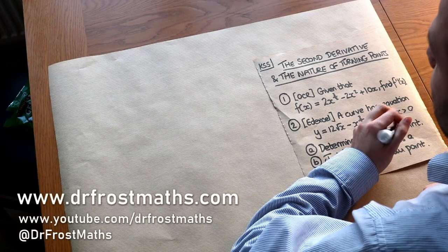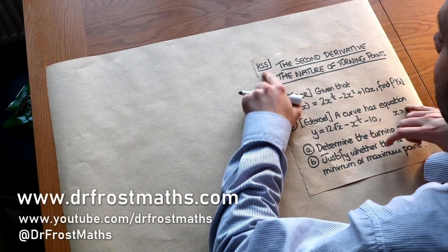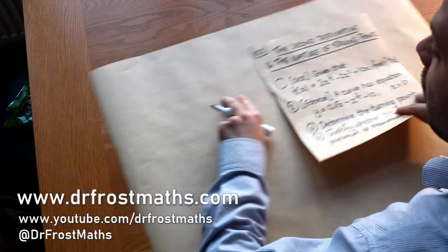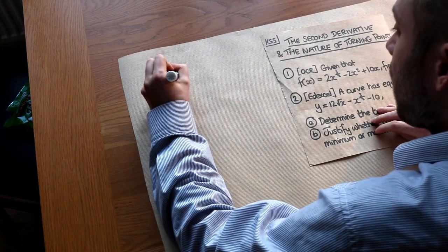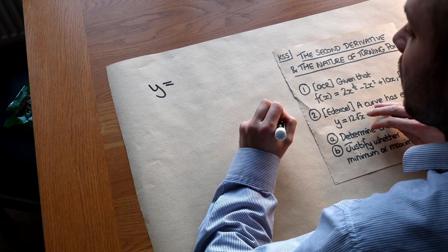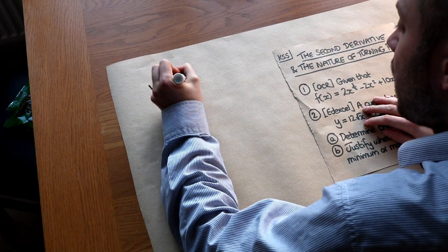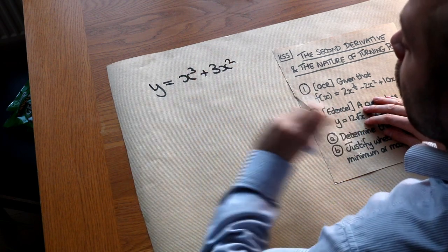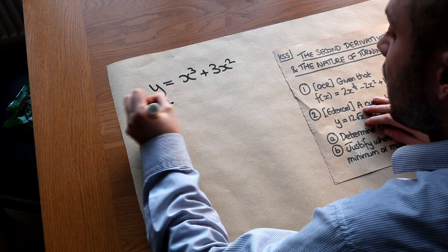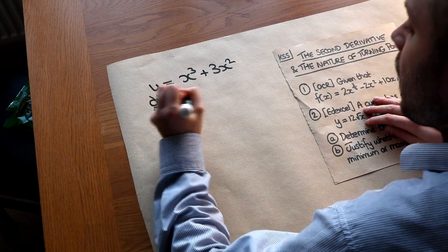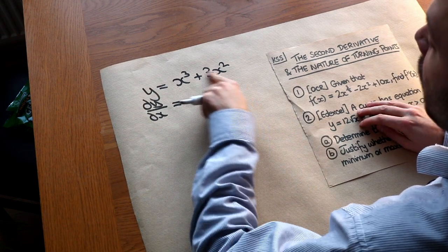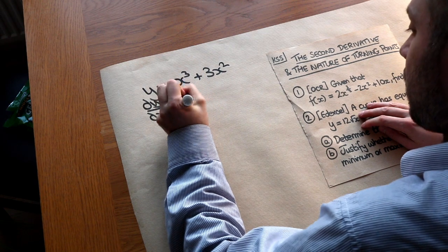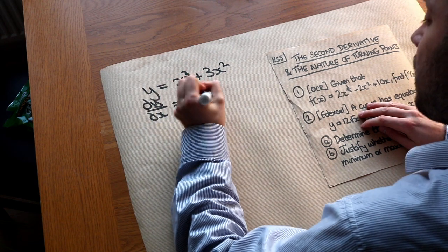Hello and welcome to this Dr Ross Maths video on Key Stage 5, the second derivative and the nature of turning points. Now we've seen if we have an expression for y in terms of x — say y equals x cubed plus 3x squared — we know that when we differentiate to find dy/dx, that allows us to find the rate of change of this expression, or the gradient function. So that was 3x squared plus 6x.